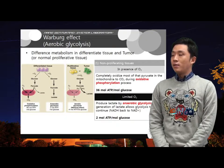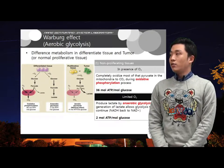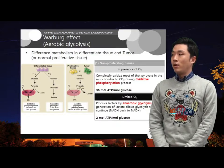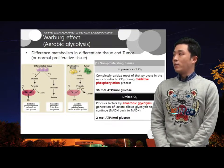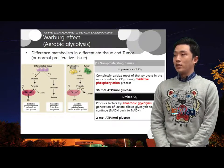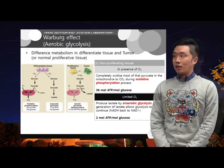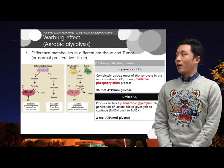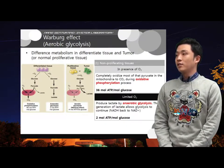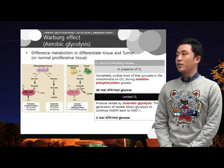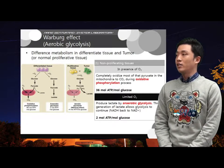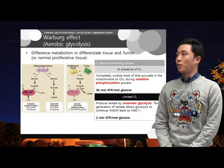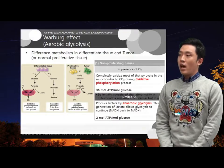When oxygen is limiting, cells can redirect the pyruvate generated by glycolysis away from mitochondria by generating lactate. This generation of lactate allows glycolysis to continue but results in minimal ATP production when compared with oxidative phosphorylation.